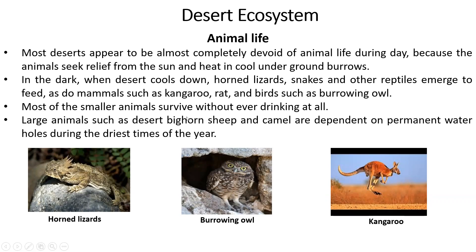Smaller animals often do not drink water directly because water is not available. Larger animals, like bighorn sheep or camels, rely on permanent water sources in desert areas. During the dry season with no rain, they migrate to find water. Examples include kangaroo rats, burrowing animals, and lizards.